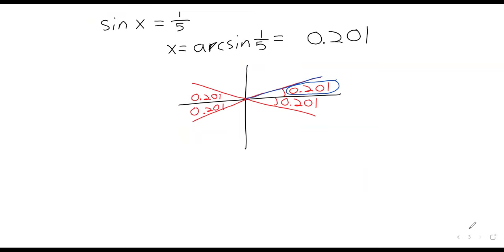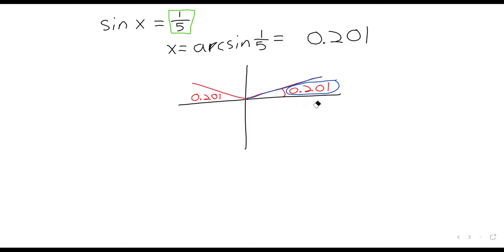Returning to this example, we want the sine to be positive one-fifth. So which of these angles should we erase? The bottom two. In the third quadrant, the sine is negative, and in the fourth quadrant, the sine is negative. So if we want the sine to be positive, we're looking at the angles in the first and second quadrants.